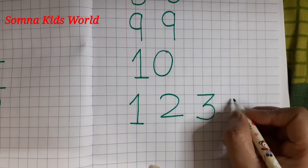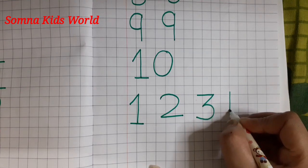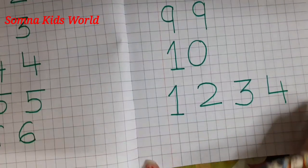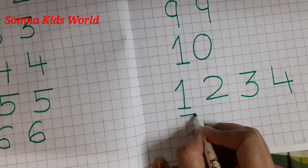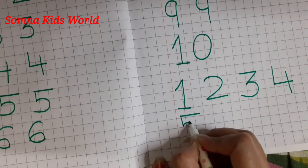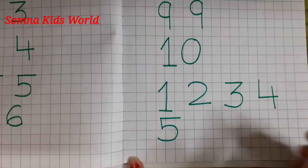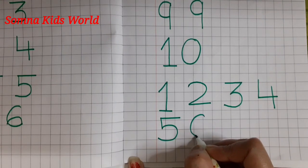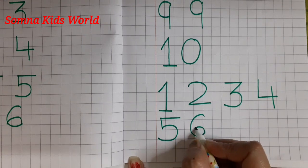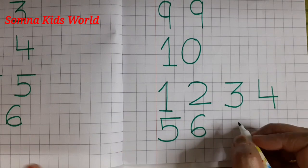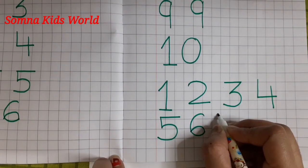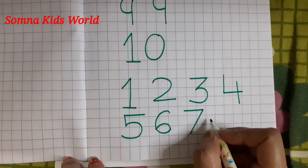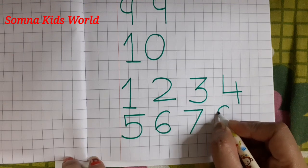Then five: make a curve — five. Then six: make a curve like this, then make another curve and join here — six. Then seven: slipping line, slanting line — seven.